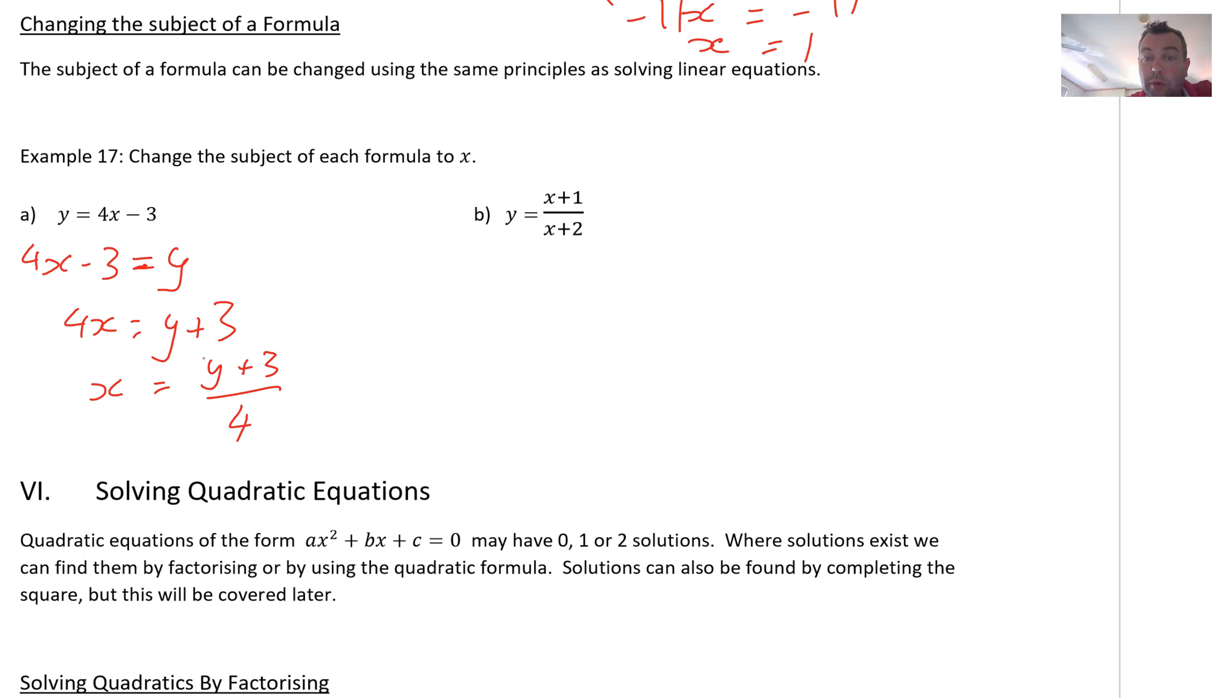I've got to make x the subject of this one. Now, this is going to be a little bit more interesting. So, what I'm going to get here is, I'm going to multiply both sides by x plus 2. I'm going to work over here. I've got a bit more space. Therefore, I get y outside of x plus 2 equals x plus 1.